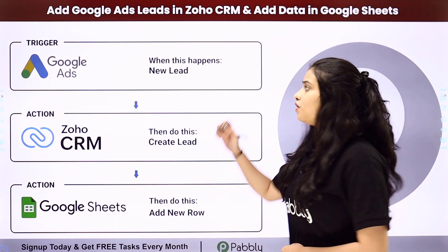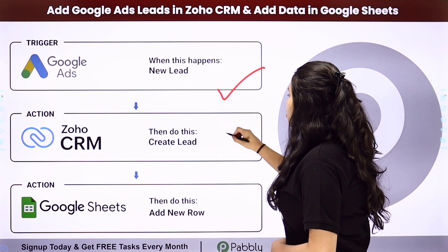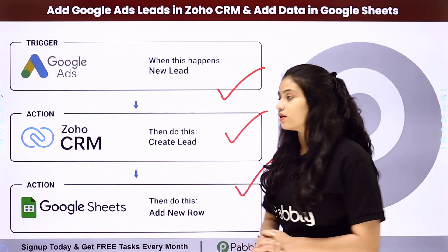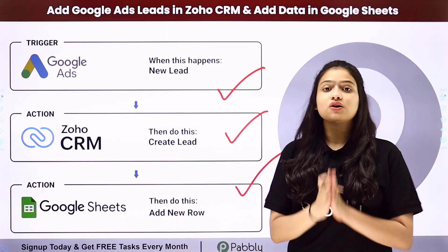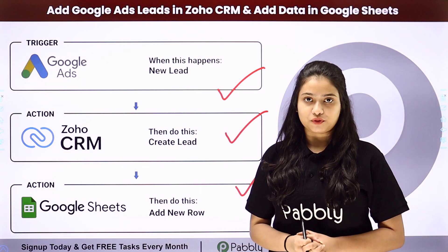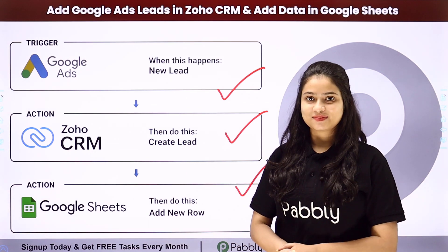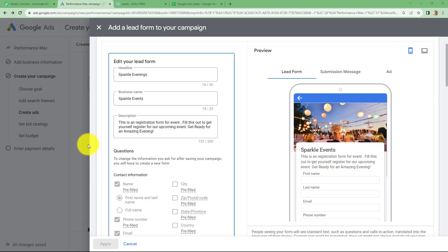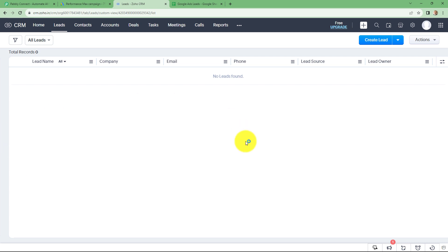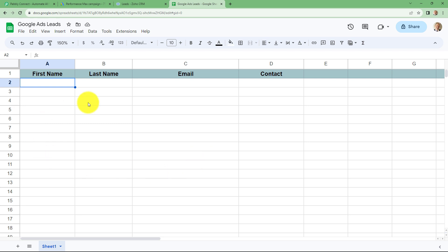Now what we are going to do: we have Google Ads in our trigger, and Zoho CRM and Google Sheets in our action. So we will be connecting all of them to automate this entire process. To learn the entire process step by step, let me take you to my screen. In this video we are going to learn how we can automatically add the leads generated from Google Ads to Zoho CRM in the form of leads, and then how we can automatically add the details of the same lead in our Google Sheets to create a new record.